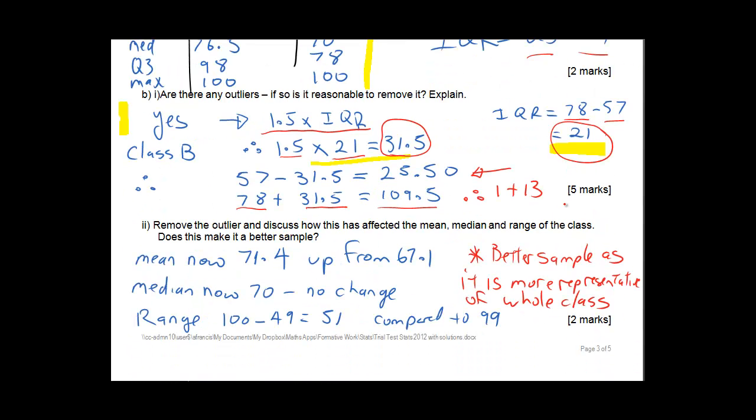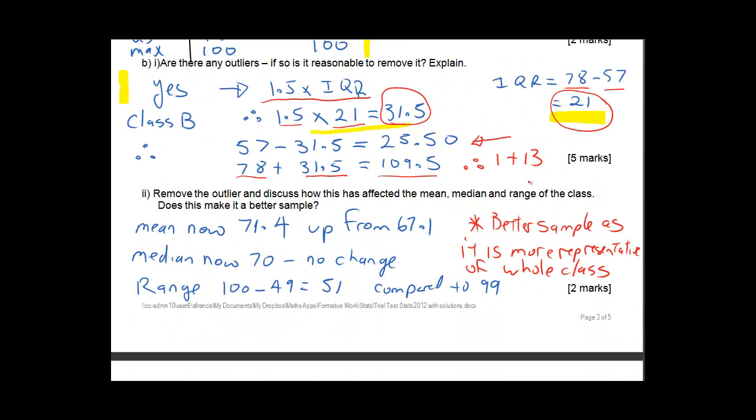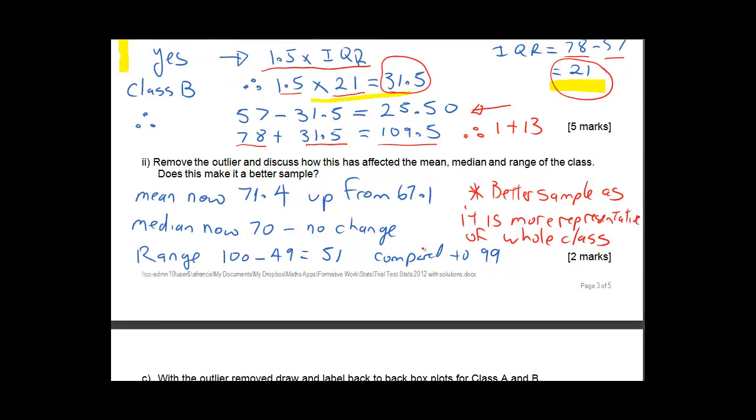So the question says are there any outliers? And we go yep there are 1 and 13 which we can take away. So now remove the outliers in this case and see how it's affected the mean. The mean has gone up from 71.4 to 67.1. Notice how the mean changes. The median is now 70 and it was 70 so it hasn't changed much. And the range has changed from 51 to 99. The sample is better now because it's more representative of the whole class. Because if you have a look at all the other numbers, all the other numbers are 49 onwards. So that number 13 and that number 1 are so far away from them that it makes it very hard to actually make a good judgement of what's going on in the class.